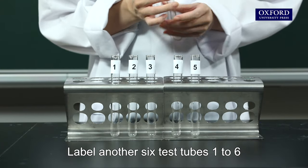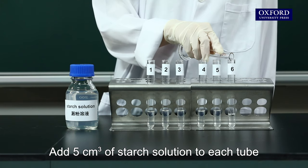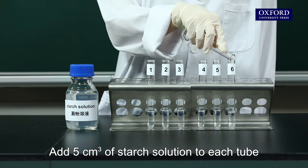Label another 6 test tubes 1 to 6. Add 5 cubic centimeters of starch solution to each tube.